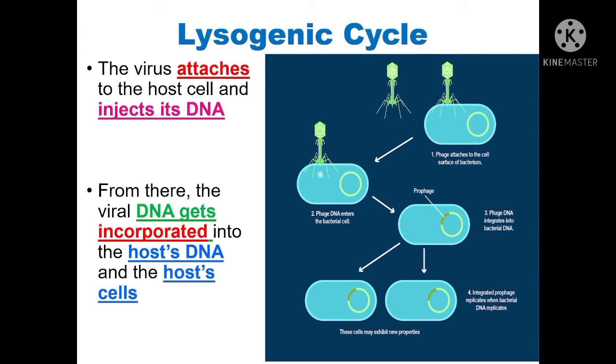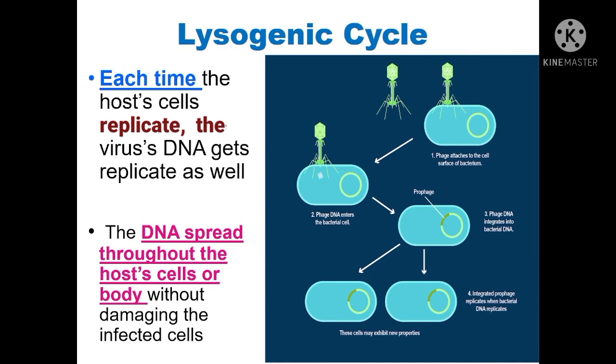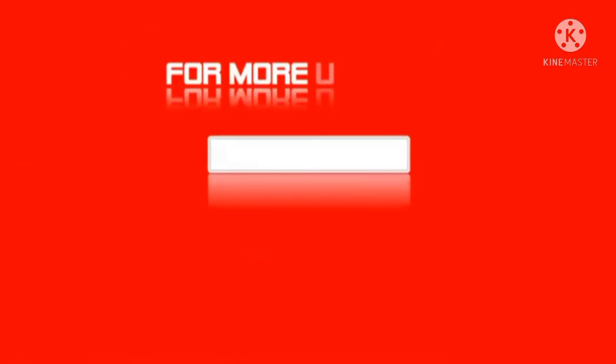In the lysogenic cycle, the virus attaches to the host cell and injects its DNA. From there, the viral DNA gets incorporated into the host's DNA. Each time the host's cells replicate, the viral DNA gets replicated as well, spreading throughout the host's cells or body without damaging the infected cells.